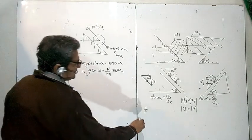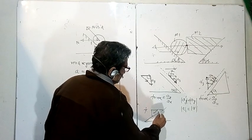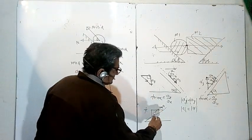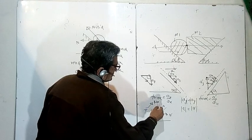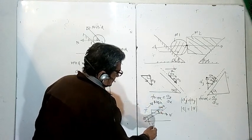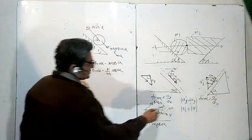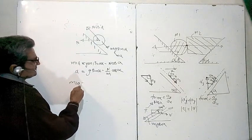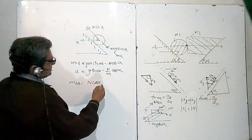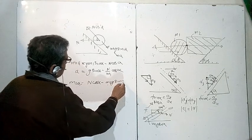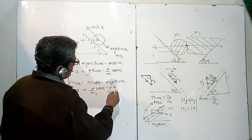Similarly, if you write another equation for the second body — the block — the acceleration is a, the normal reaction is in this direction, and the component in the upper direction gives N cos alpha and m2g sin alpha. So the equation of motion in the upper direction gives a is equal to (N upon m2) cos alpha minus g sin alpha.